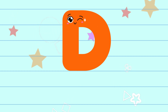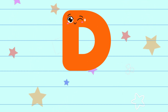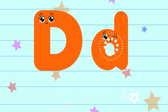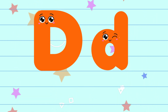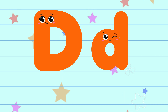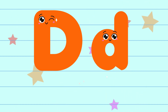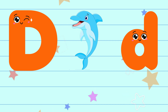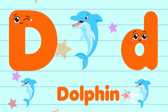D. The color of the letter D is orange. The sound of the letter D is da. D is for dolphin.